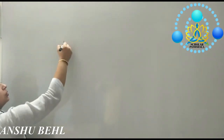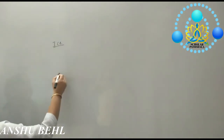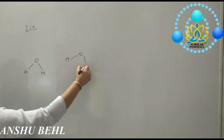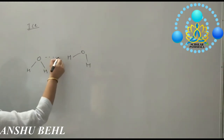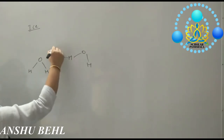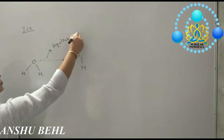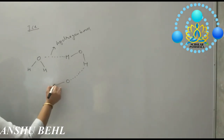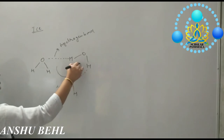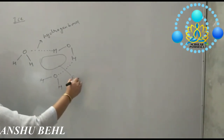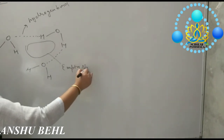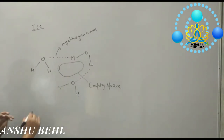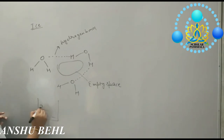Why does ice float on water? See the structure of ice. We have water molecules. These water molecules are binding with each other through forces known as hydrogen bonds. When it freezes, it is having now empty space. In the empty space, air is filled. So its density decreases, and ice keeps on floating over the surface of water.